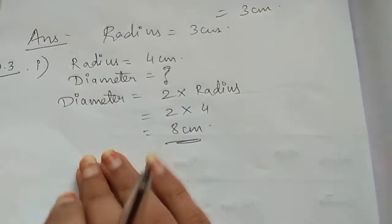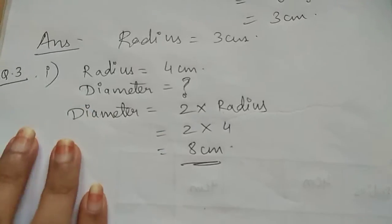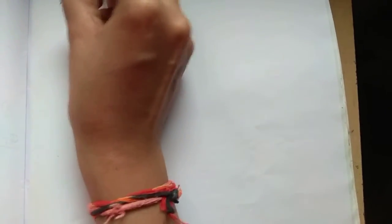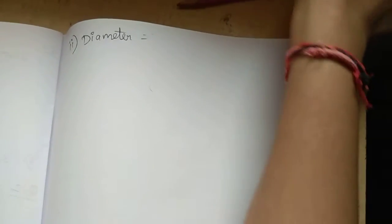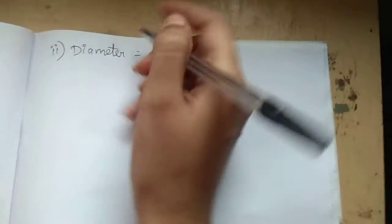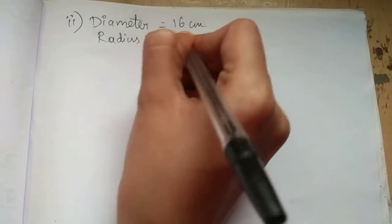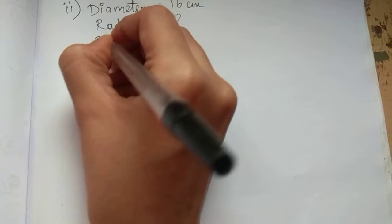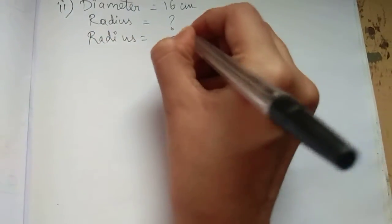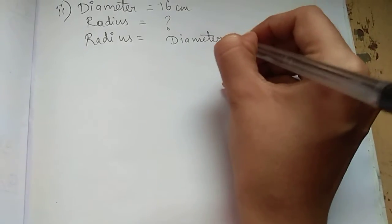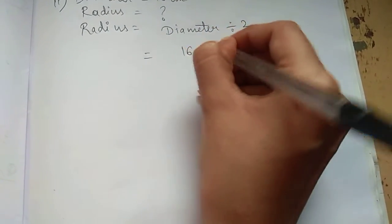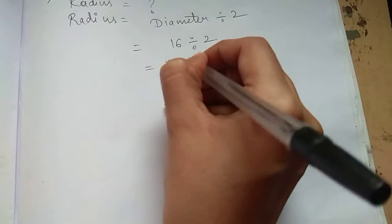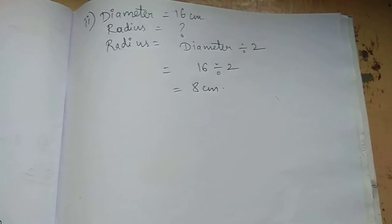Diameter equal to 16 centimeter, radius we have to find. What's the formula of radius? Diameter divided by 2. So 16 divided by 2 gives us 8 centimeter. So this is how we will be solving.